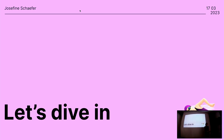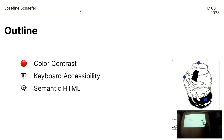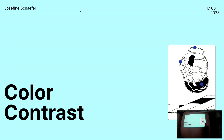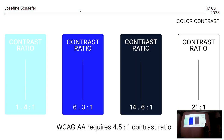Let's get a little bit more practical. We're going to talk about the most commonly occurring issues. Color contrast is the number one thing that usually goes wrong when testing for accessibility. Keyboard accessibility is also an important one. And we're going to have a look at semantic HTML, which kind of lays the foundation for everything else. Color contrast basically means we want the background and foreground to have enough difference — and that's the ratio we measure by.